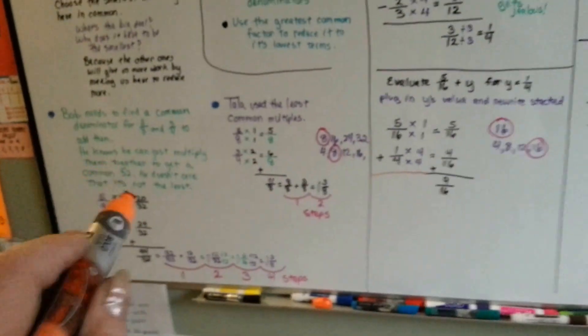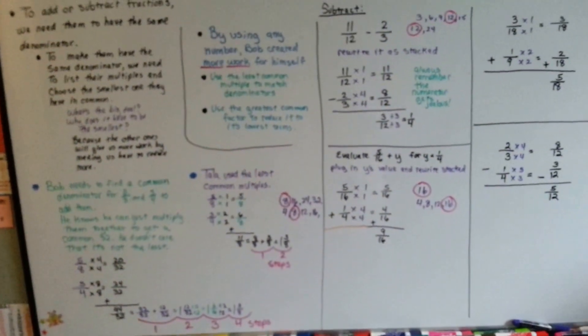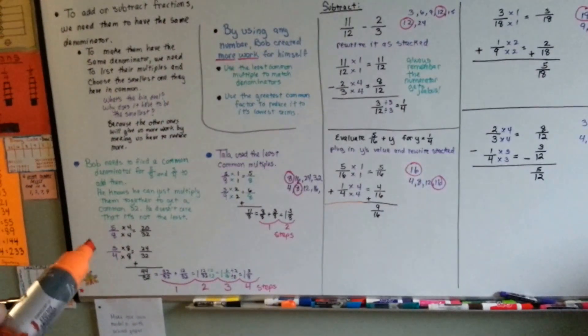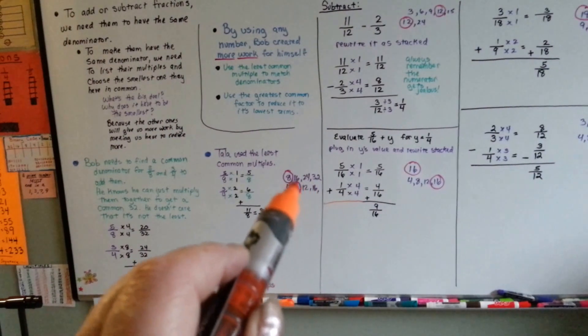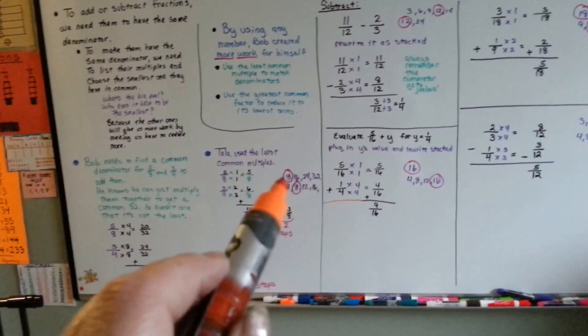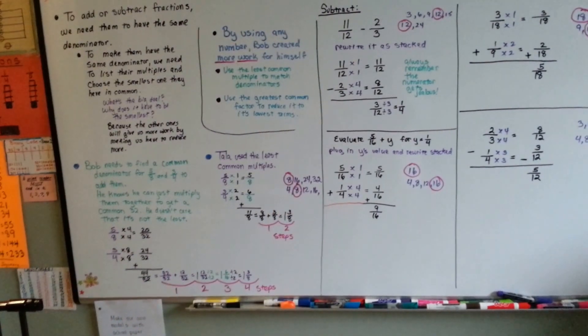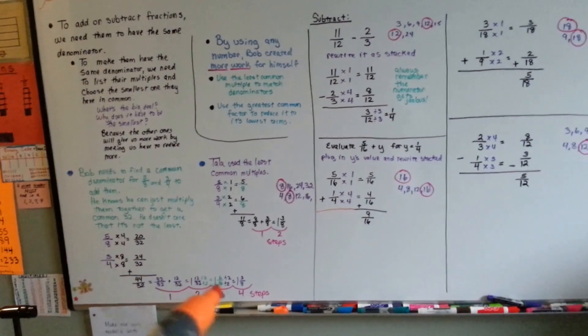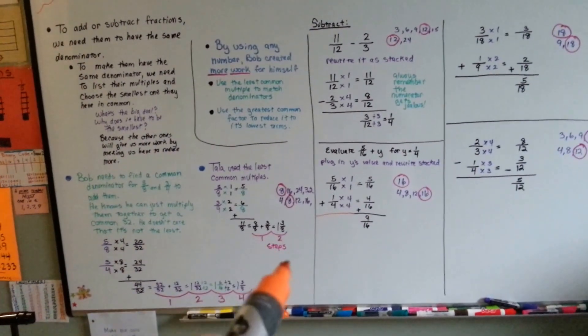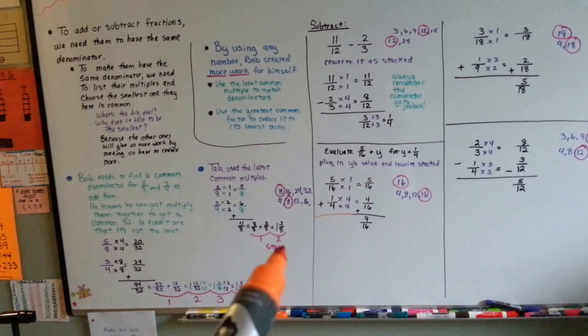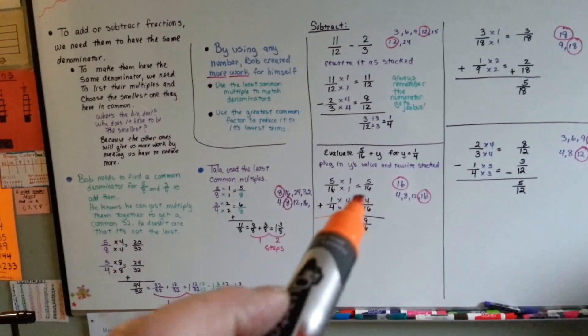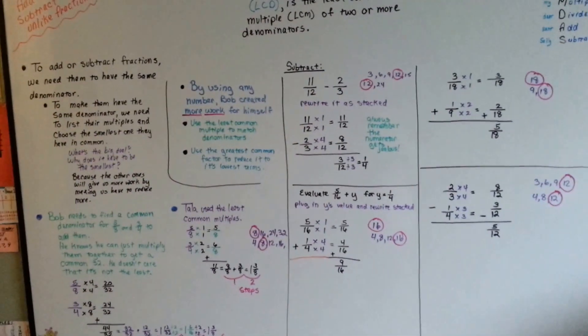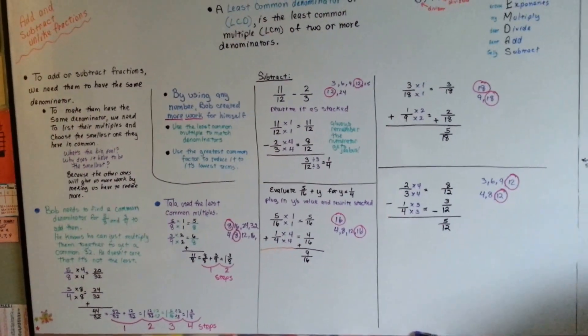So don't be like Bob and don't create extra work for yourself. Try to find the number. List the multiples. It's no big deal to make a little list and just list the multiples, the multiplication answers, the products. Just list the products for both and see where they can meet. And when you're reducing it, try to find the greatest common factor they have. I always try putting the numerator into the denominator to see if it goes in evenly, because sometimes that's quick too. So now you know how to add and subtract unlike fractions.